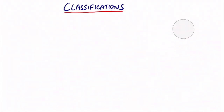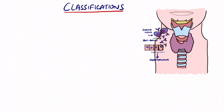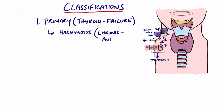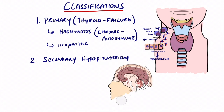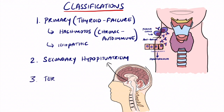Let's look at the different classifications of hypothyroidism. Primary, also known as thyroid failure, includes Hashimoto's — a chronic autoimmune condition — and idiopathic conditions with no known cause. Secondary is usually caused by hypopituitarism, where a pituitary adenoma or pituitary problem causes decreased TSH. Tertiary involves hypothalamic dysfunction, and pituitary resistance means cells are resistant to T3 and T4 effects so metabolism doesn't take place.